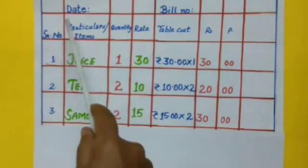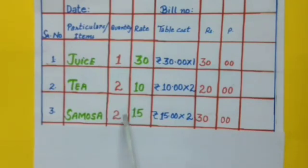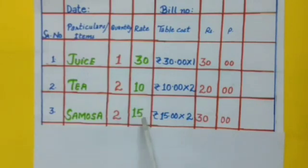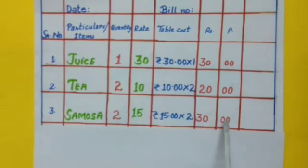Serial number 3: samosa. How many samosas were ordered? Yes, 2 samosas were ordered. Rate per samosa is rupees 15. So total cost: 15 into 2 is 30 rupees.